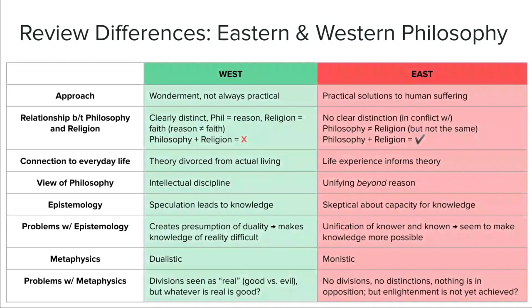Another distinction between the two is views on knowledge, or what we call epistemology in philosophy. In the west, knowledge is considered something very plausible for humans to achieve — whether from our existence, sacred texts, spiritual paths, or the divine itself. Whereas eastern traditions are more willing to embrace a skepticism about knowledge — the idea that some, if not all knowledge, might be impossible for us to achieve. That's going to play an interesting role in how one achieves enlightenment or union with the divine.